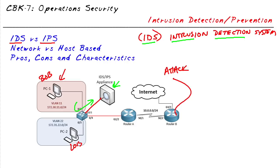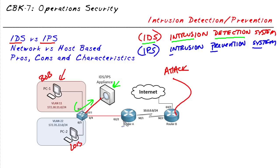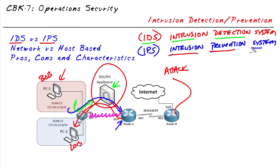Now let's compare that with IPS, which stands for intrusion prevention system. It works a lot like an IDS, except we put it inline with the traffic. For example, the path between PC1 and PC2 — because they're in different VLANs — goes through their default gateways via a trunked connection between the switch and the router. If we insert the IPS appliance between the switch and the router, all traffic from VLAN 11 must pass through the IPS to reach the default gateway. Because this appliance is now inline, it's an intrusion prevention system — if it sees malicious traffic, it can stop that traffic right in its tracks, preventing the attack from moving further into the network.